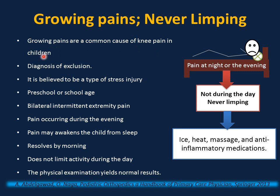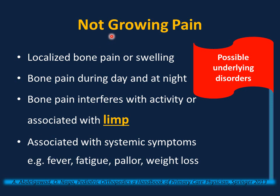Growing pains are a common cause of knee pain in children and are a diagnosis of exclusion. Common between preschool and school age. They present with bilateral intermittent extremity pain with no specific location, occurring during the evening, and may awaken the child from sleep, but resolve by morning and do not limit physical activity during the day. Physical examination is normal. Key points: the pain occurs at night or in the evening, not during the day; does not interfere with physical activity; and — very critical — never causes limping. Treatment is reassurance, ice, heat, massage, and anti-inflammatory medications. These presentations are NOT growing pains and must be investigated: localized bone pain or swelling, bone pain during the day and at night, bone pain that interferes with activity or is associated with limp, or pain associated with systemic symptoms such as fever, fatigue, pallor, and weight loss.